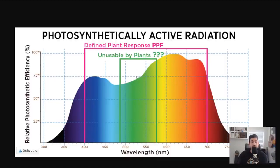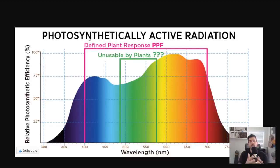Within PAR, you can start to customize your spectrum, which gets really in depth. But to summarize: photosynthetically active radiation refers to the range of light that plants are using for photosynthesis.